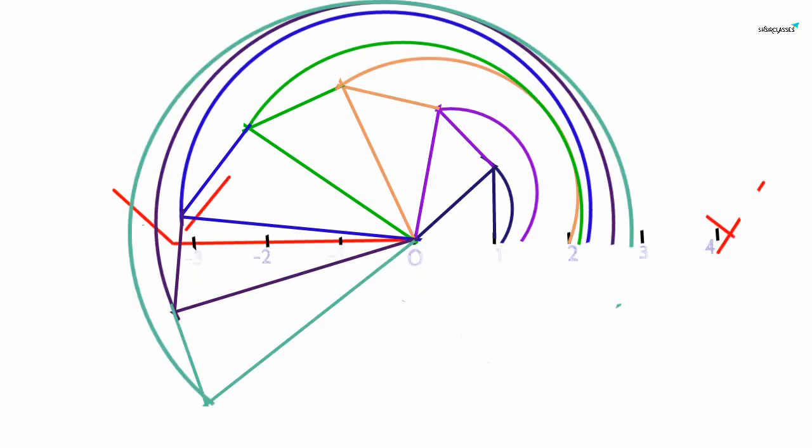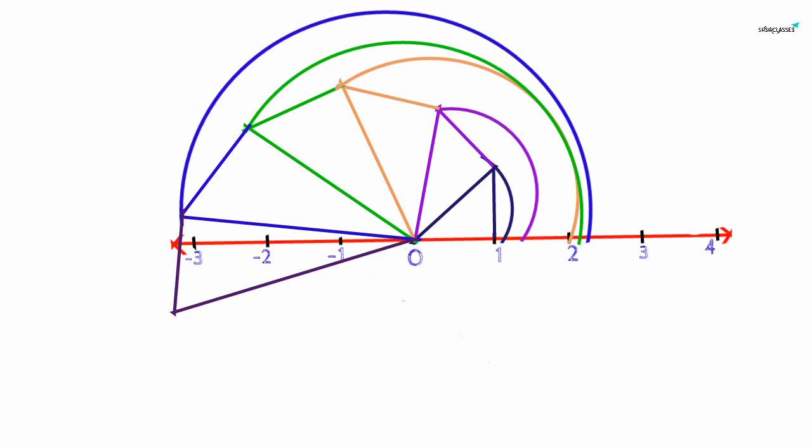Here is an interesting fact: if we place all the triangles together in this way, we get a spiral. That's all — thanks for watching, please subscribe, like, and comment.